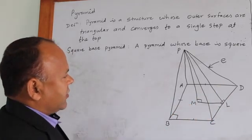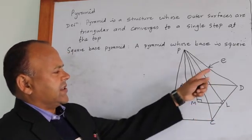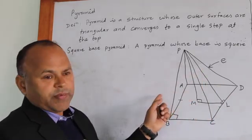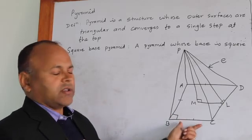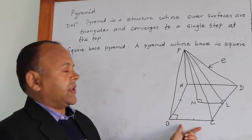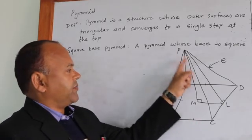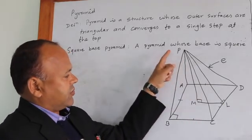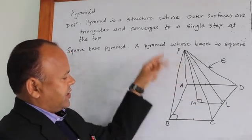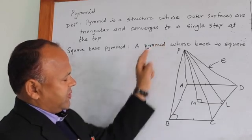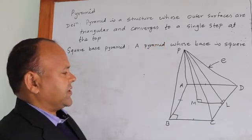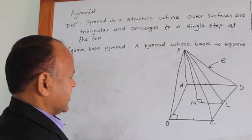All these edges will be equal since this is the square base pyramid. Here P-D is equal to P-A is equal to P-B is equal to P-C. These are the edges.